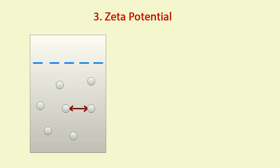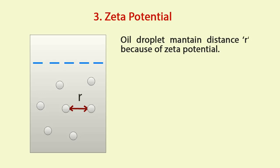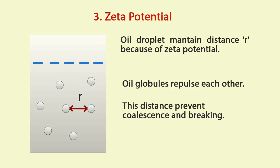Zeta potential. Because of certain zeta potential values, the oil droplets in an emulsion are aligned at a sufficient distance between them. Because of electrical charge on the surface, these oil globules repulse each other, that's why sufficient distance is maintained between these two droplets. This prevents coalescence and subsequent breaking of the emulsion.